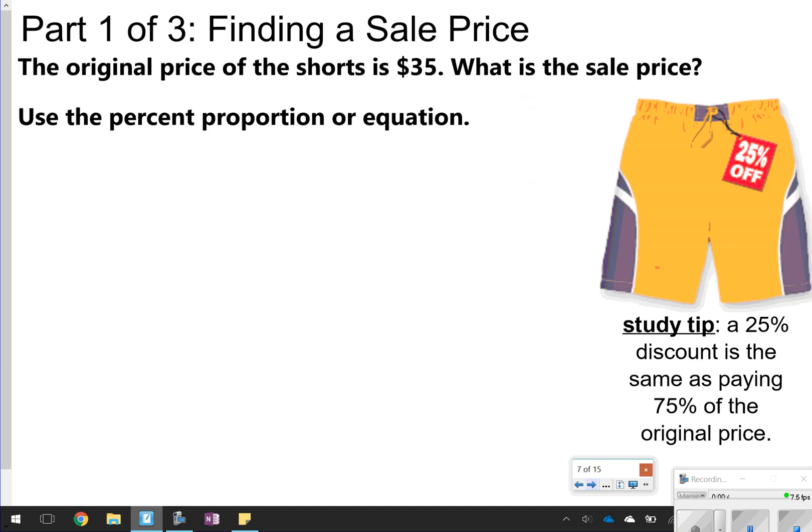The next thing we're going to talk about is how to find a sale price. So this one talks about these shorts over here. They're originally $35, and we're trying to find the sale price. There's a few ways that you can do this. You can do the percent proportion or the equation. Whenever you're finding a sale price, it might be easier to use the equation, but I'm going to show you both ways. To do the percent proportion, we would have x out of 35, because 35 is the whole price, is equal to 25% out of 100.